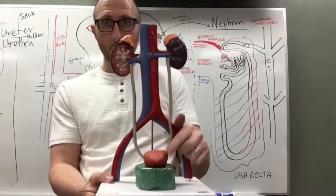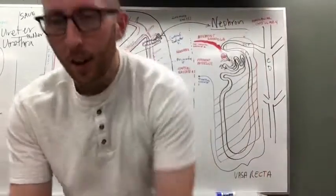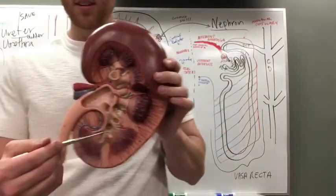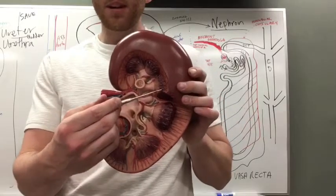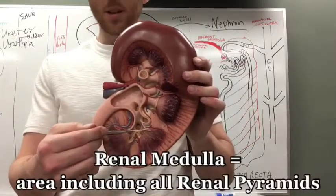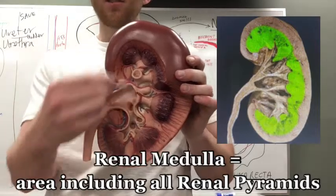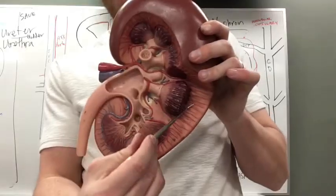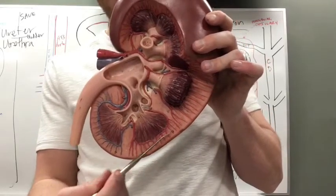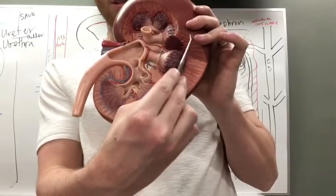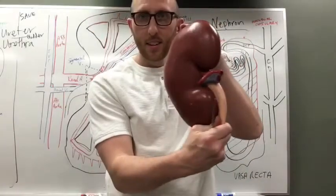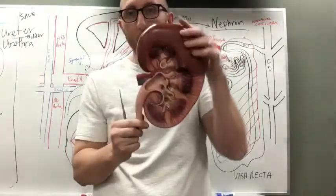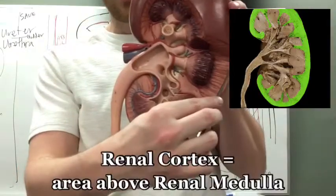All of these renal pyramids together make up the renal medulla — the area with all the pyramids. Above the medulla, there's a space traveling over the kidney; since the kidney is 3D, make sure you've seen a 3D image of it. That outer area is called the renal cortex.